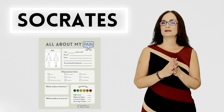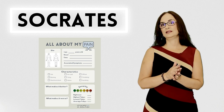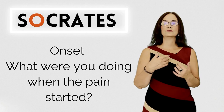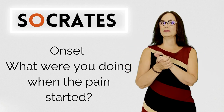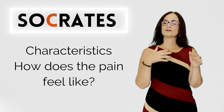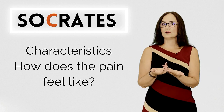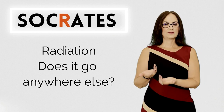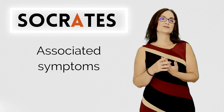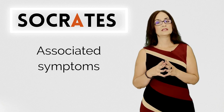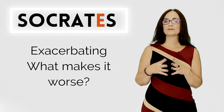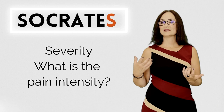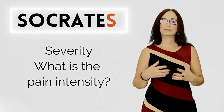I use the SOCRATES method to get the information I need about pain. S is for site — where does it hurt? O is for onset — what were you doing when the pain started? C is for characteristics — how does the pain feel like? R is for radiation — does it go anywhere else? A is for associated symptoms. T is for time — when did it start? E is for exacerbating — what makes it worse or better? S is for severity or pain intensity.